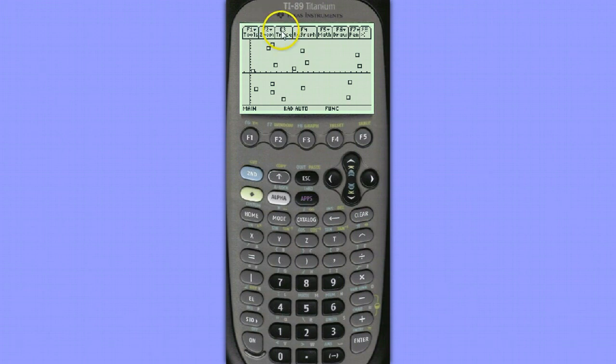If we hit trace F3, we can actually see some of the residuals. We can see trucks that were less expensive than what was predicted by the regression line and ones that were more expensive, like this one. This was more expensive than what would be predicted by the regression line.